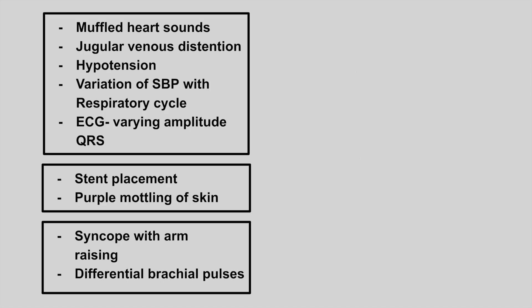The next one is someone who presents with muffled heart sounds, jugular venous distension, hypotension, a variation in systolic blood pressure with breathing, and varying amplitudes of the QRS on the ECG. This is cardiac tamponade. The jugular venous distension, hypotension, and muffled heart sounds are all part of Beck's triad.